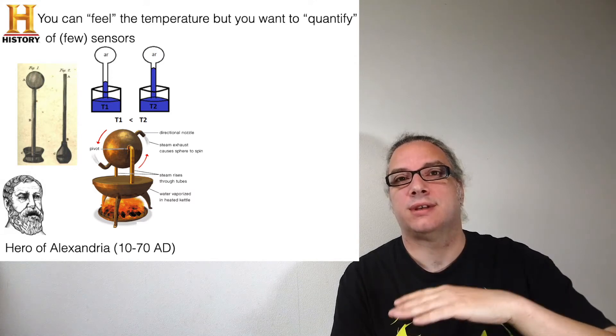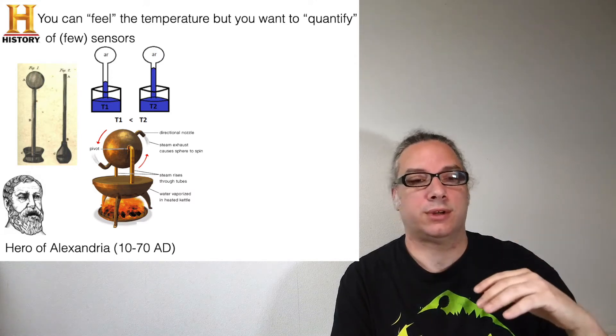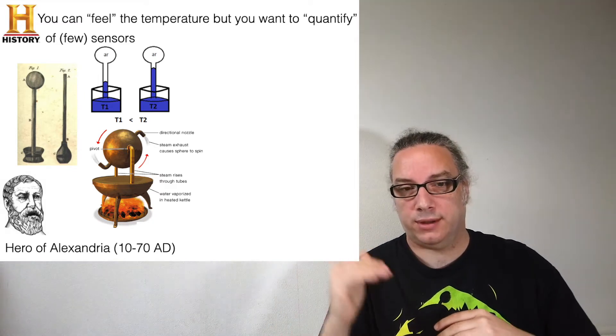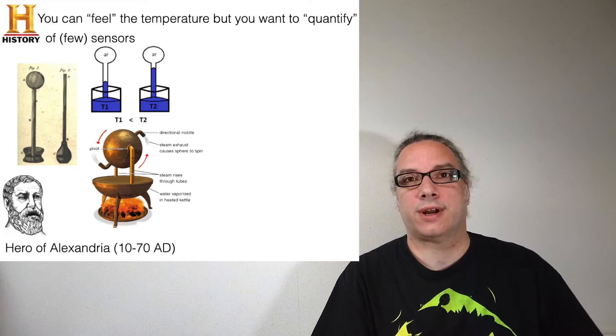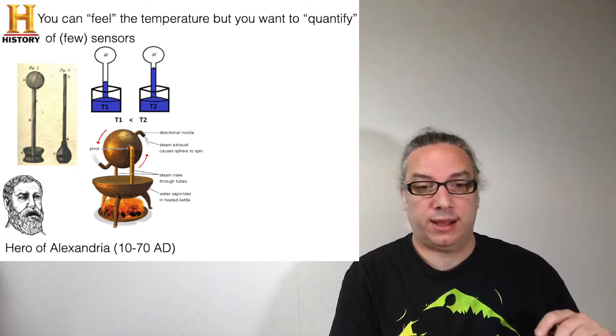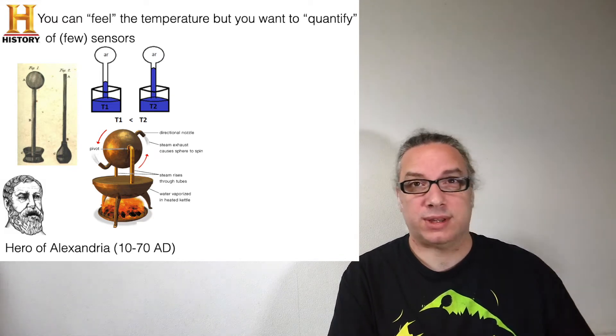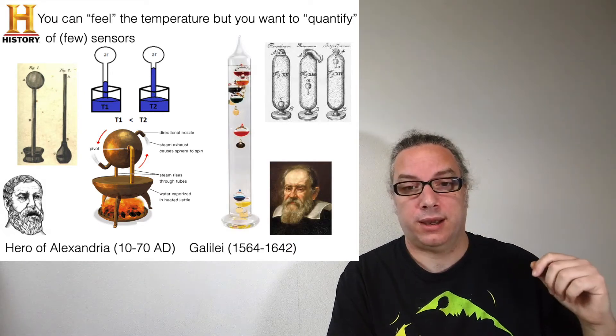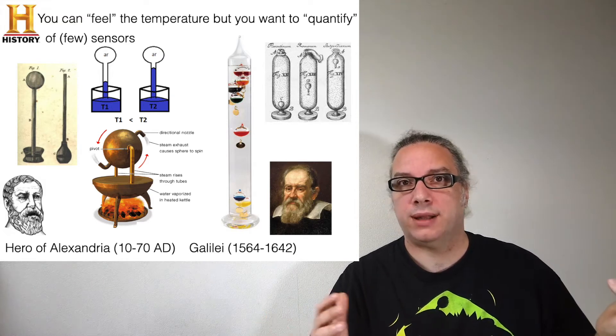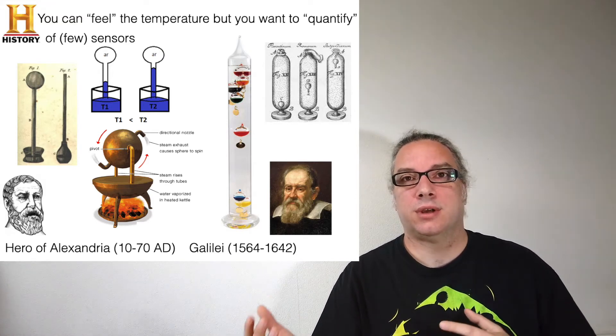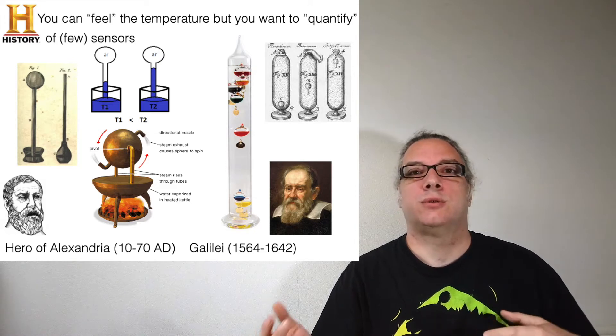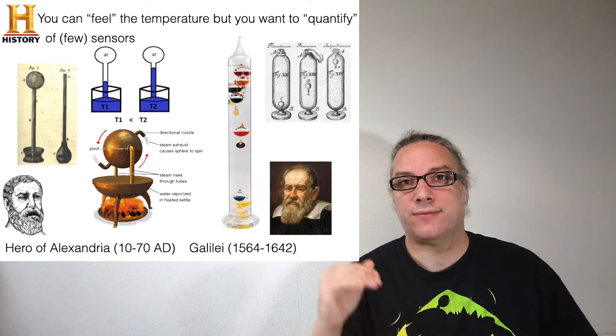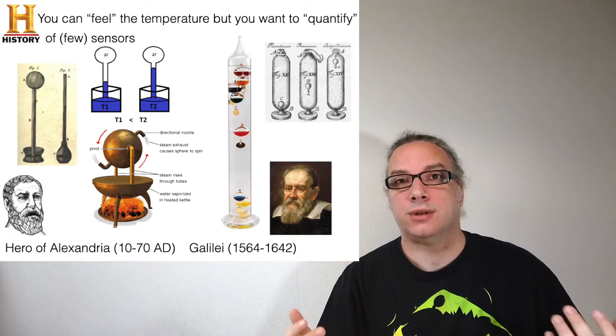At different temperatures, those gases have a different pressure on the water. Depending on the pressure and temperature, you have a different level of the water rising. Then we need to take another 1500 years for reaching the second one, which is Galileo Galilei. He used similar methods but used the density of different liquids. The density is also changing with different temperature, and then those glass vessels are floating inside another liquid depending on outside temperature.